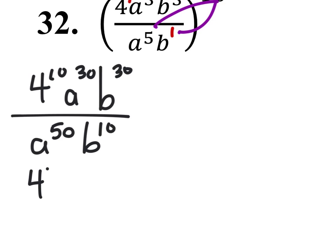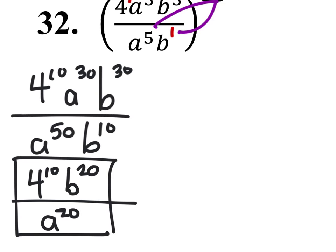So that would be 4 to the power of 10, a to the power of 30 minus 50 gives us a to the power of negative 20, so I'll put it in the denominator. Then b to the power of 30 minus 10 would be b to the power of 20, which remains positive. This is my final answer.